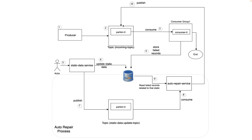The auto repair process will republish those messages to the incoming topic so they can be reprocessed. If the particular static data has been updated properly and the process validation configuration is correct, the main process should now be able to successfully validate and process the message further, and it should end up as successfully processed.